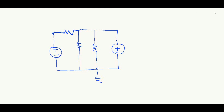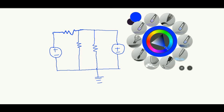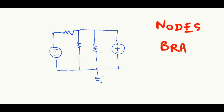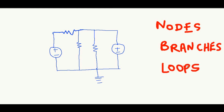We need to identify: number one, the number of nodes in this circuit; number two, the number of branches; and number three, the number of loops in this circuit. We'll start off with the basic definition of branches.